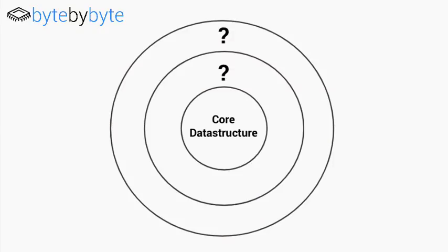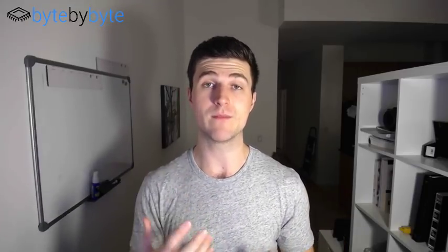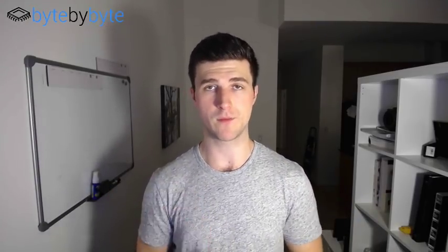We move out to this second circle, which is our core patterns. Once we've implemented our data structure itself, we're going to move one layer out into the core patterns, and these are where we start to get interesting. The core patterns are really those key algorithms that you need to know related to a given data structure. A great place to figure out what those core algorithms are is to look up the standard implementation of a specific data structure — for example with Java, you might look up the list interface. It's going to show you things like adding a node to a list, removing a node, reversing the list, getting the nth element. These are the core algorithms you want to be thinking about.